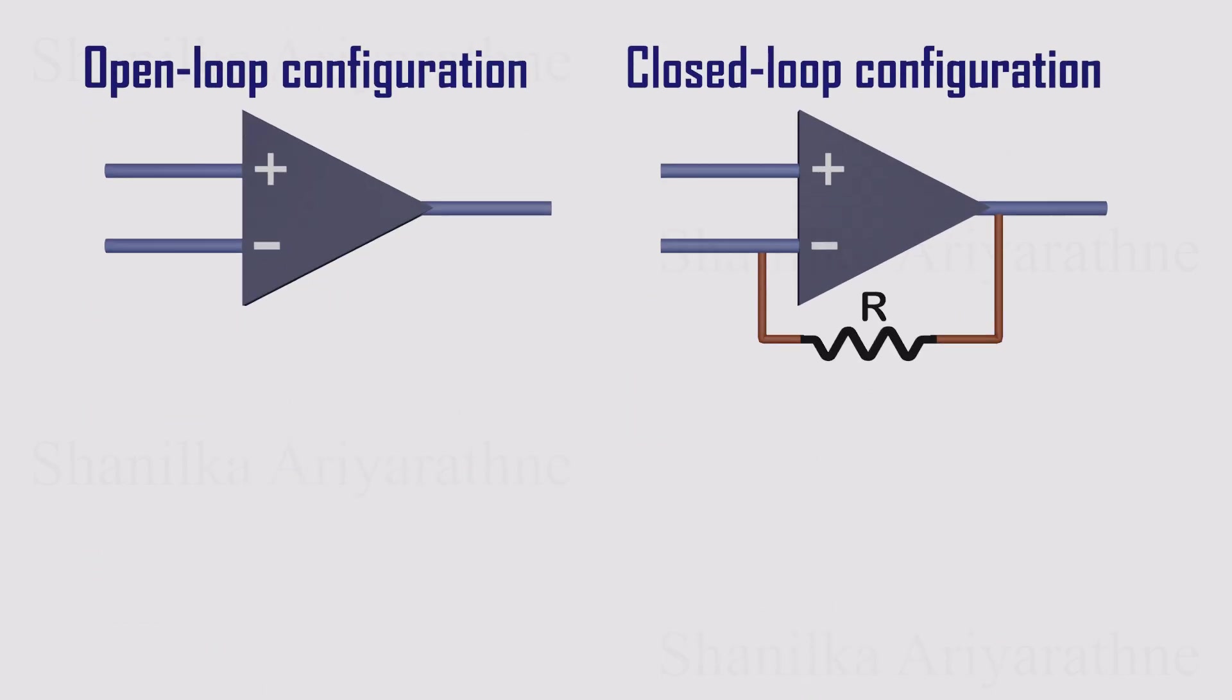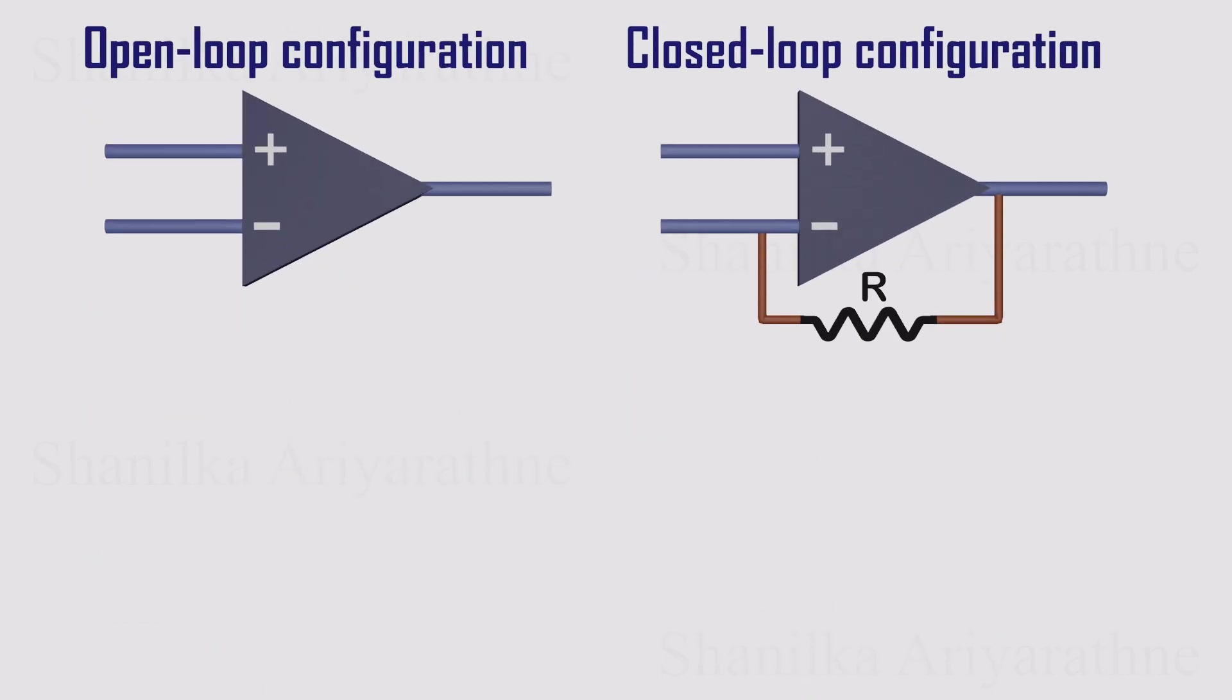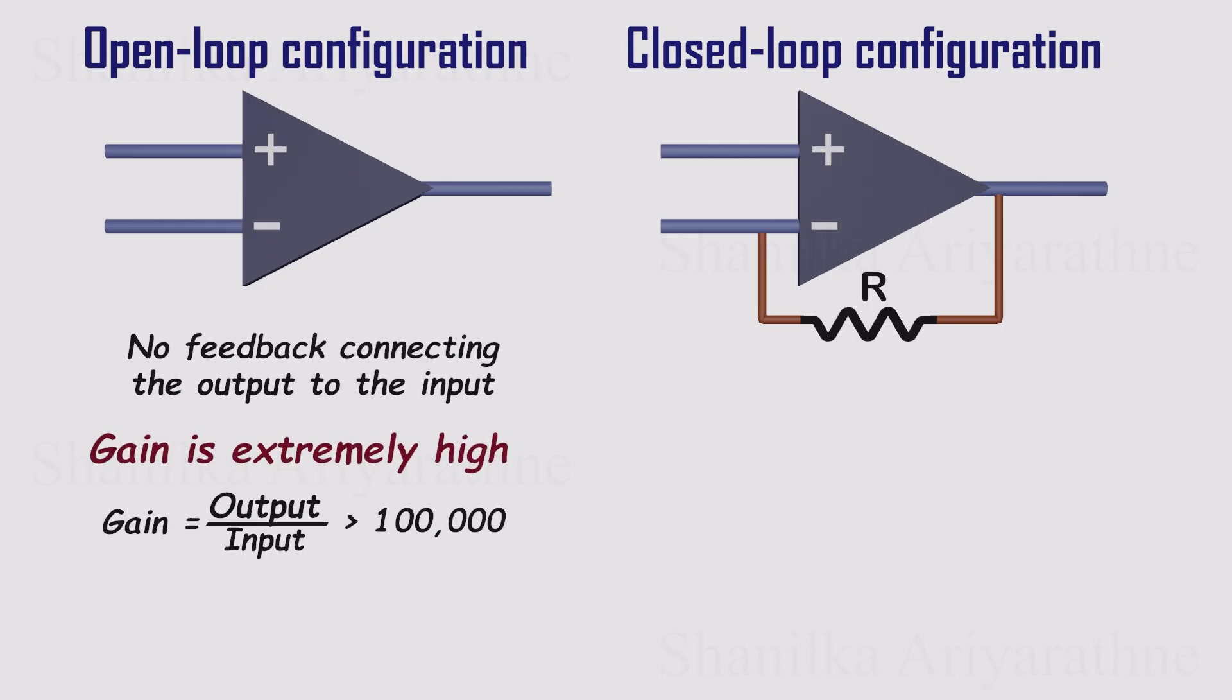Op amps are usually used in one of two modes, open loop or closed loop. In open loop, there's no feedback, so the gain is enormous. Hundreds of thousands or more. That's why open loop mode is mainly used in comparators, where the only job is to figure out which input is bigger. We've got a full video on comparators, link in the description.